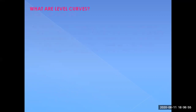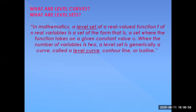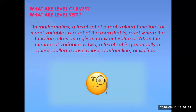Let's look at the formal definition first. In mathematics, a level set of a real-valued function f of n variables is a set where the function takes on a given constant value c. When the number of variables is 2, a level set is generally called a level curve, a contour line, or an iso line. This seems confusing, but we'll come back to this definition later.